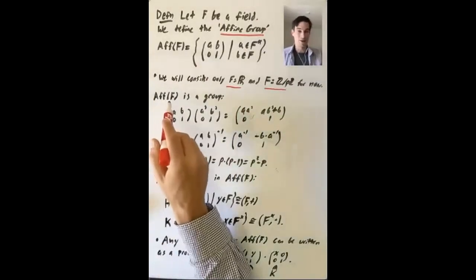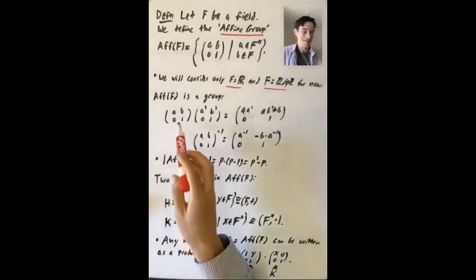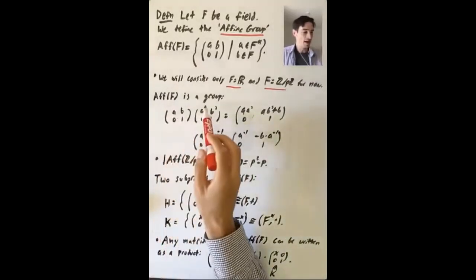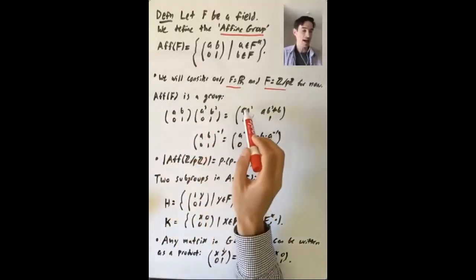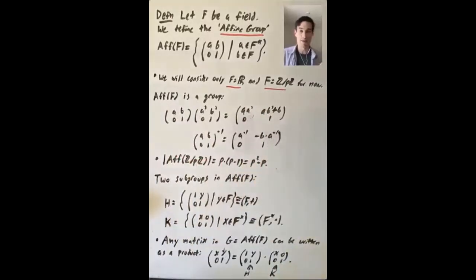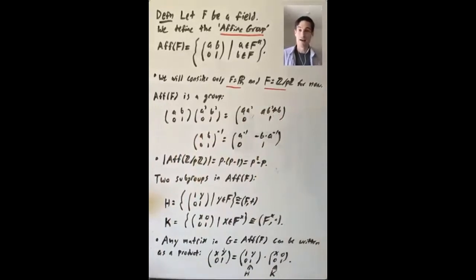This group of affine matrices is actually a group. Let's see what happens when we multiply two such matrices: [A, B; 0, 1] times [A', B'; 0, 1] equals [AA', AB' + B; 0, 1]. So this operation is well-defined — you take two matrices in this set and get back another one in this set. The operation is associative because matrix multiplication is always associative, as it's just composition of functions.